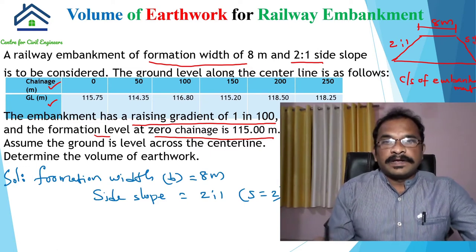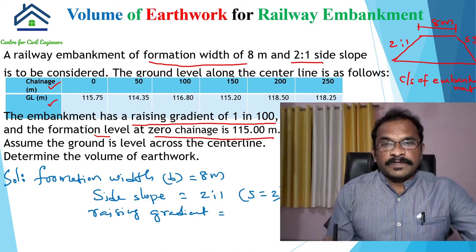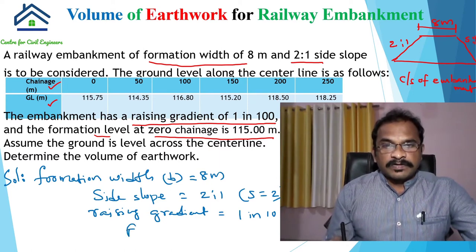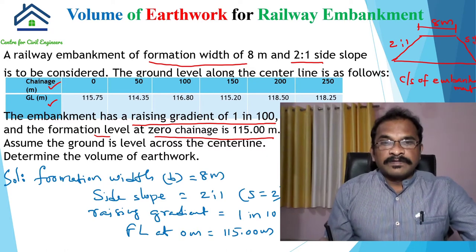Another given data is the rising gradient of 1 in 100. I will explain what this means and how to calculate formation levels using this rising gradient. The formation level at chainage 0 meter is given as FL = 115 meters. With this given data we can calculate the total volume of earthwork.